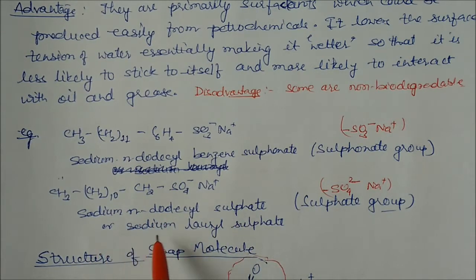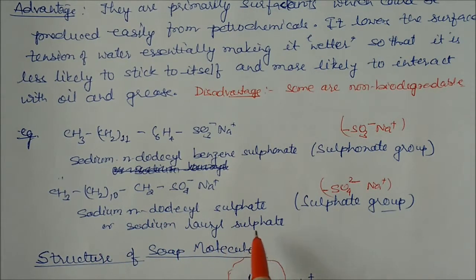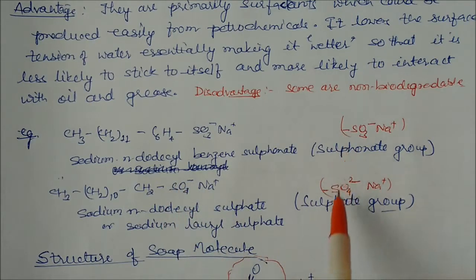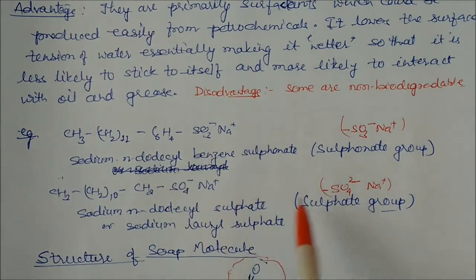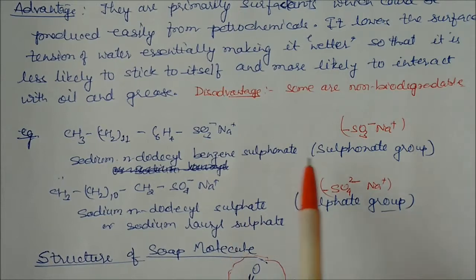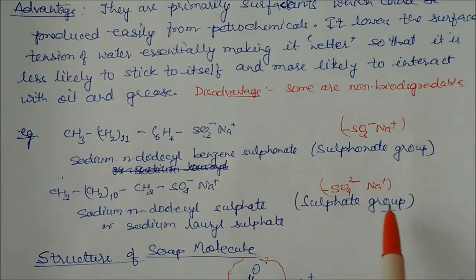Sodium dodecyl sulfate is also called sodium lauryl sulfate. Here you can see the sulfate molecule. There are two types of groups: sulfonic acid (sulfonate) and hydrogen sulfate (sulfate) groups.